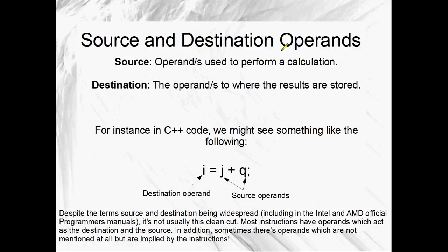Source and destination operands is a really important concept, especially if you're reading the Intel and AMD programmers' manuals - they talk about source and destination a lot. It does get pretty confusing, though, since the destination is often a source operand as well. Basically, the source operands are used to perform a calculation, and the destination is where the answer is going to be stored. So if you have something like i equals j plus q, you could say that j and q are the source operands and i is the destination. This is obviously not assembly - maybe C++ code or something - but that's the idea.